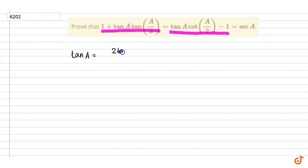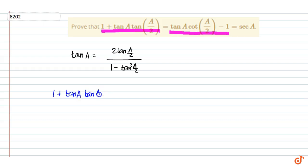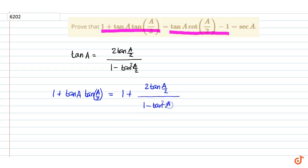...2 tan(A/2) divided by 1 minus tan²(A/2), using this formula. So 1 + tan A · tan(A/2) equals 1 plus 2 tan(A/2) divided by 1 minus tan²(A/2), into tan(A/2).